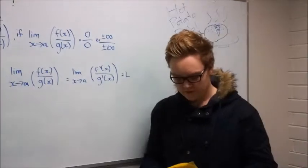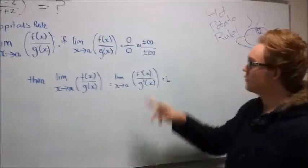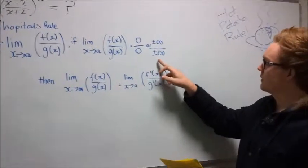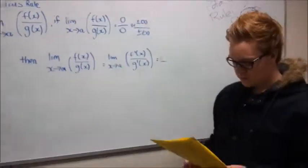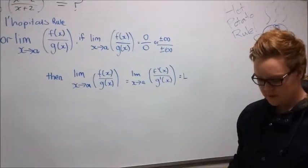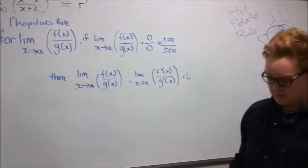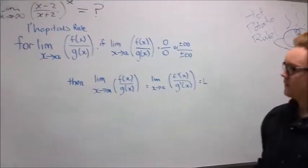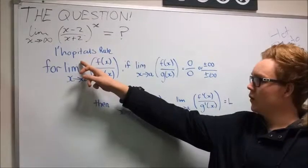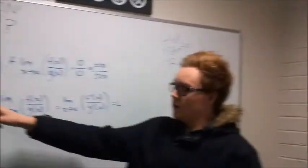So basically if there is a limit and we get an answer in the form of 0/0 or ∞/∞, we say the limit is in an indeterminate form. Sometimes we can use algebraic manipulation; however, other cases we have to use L'Hôpital's rule, also known as Hot Potato rule.